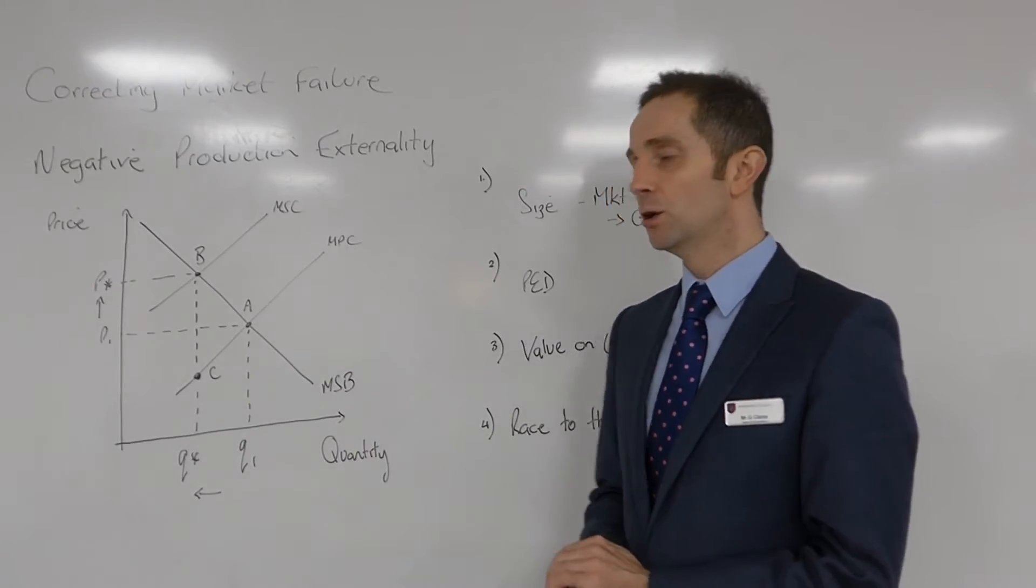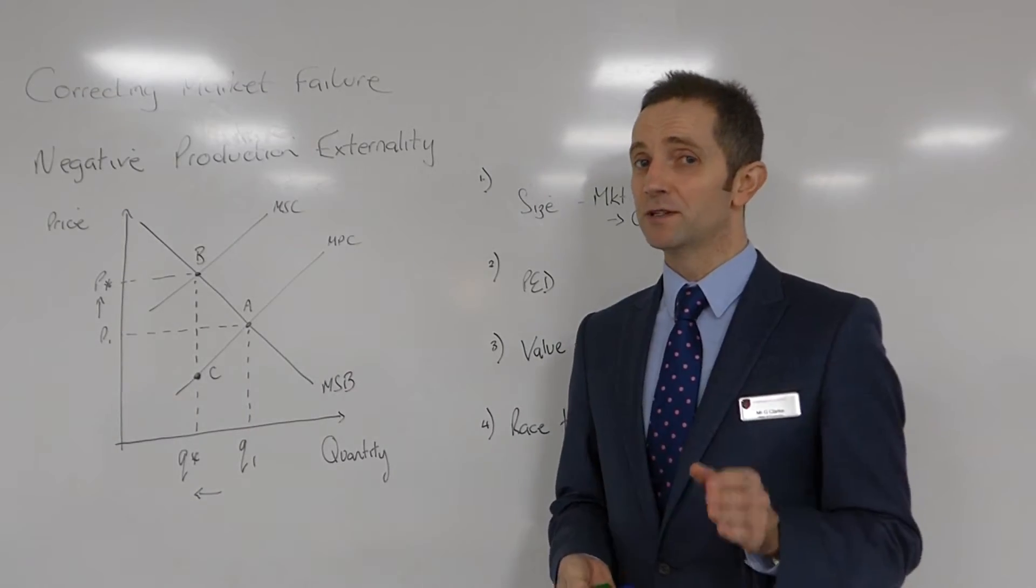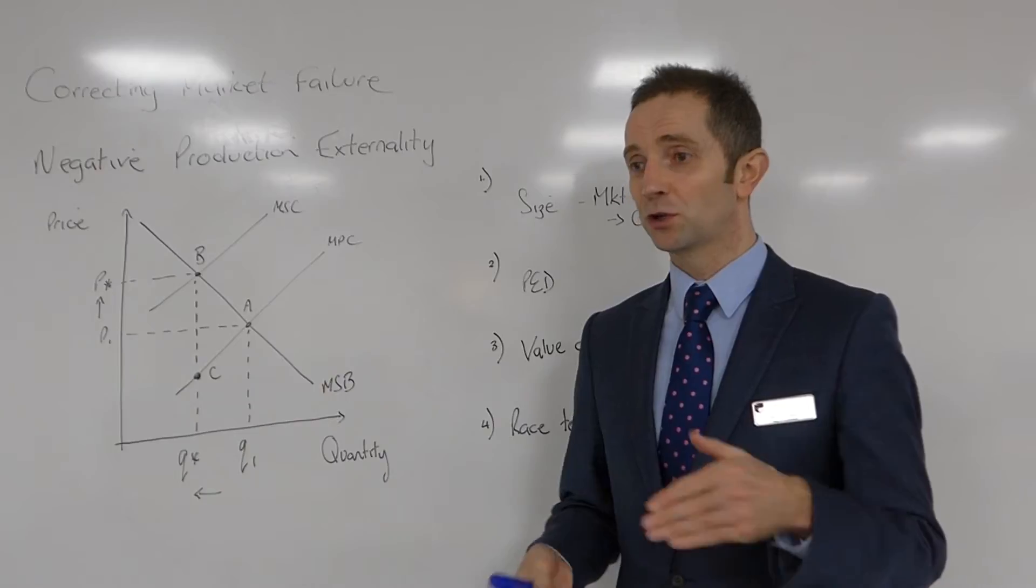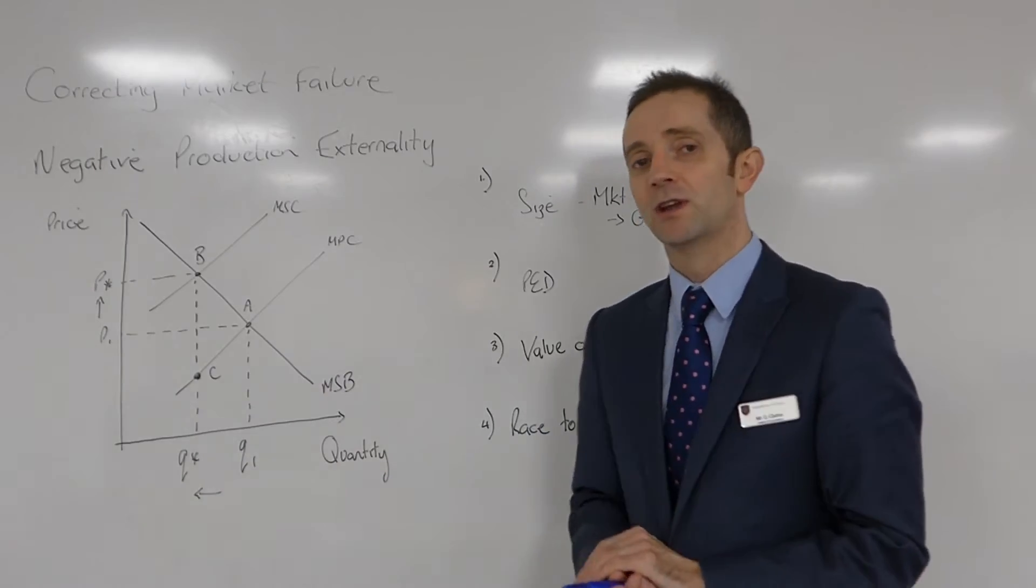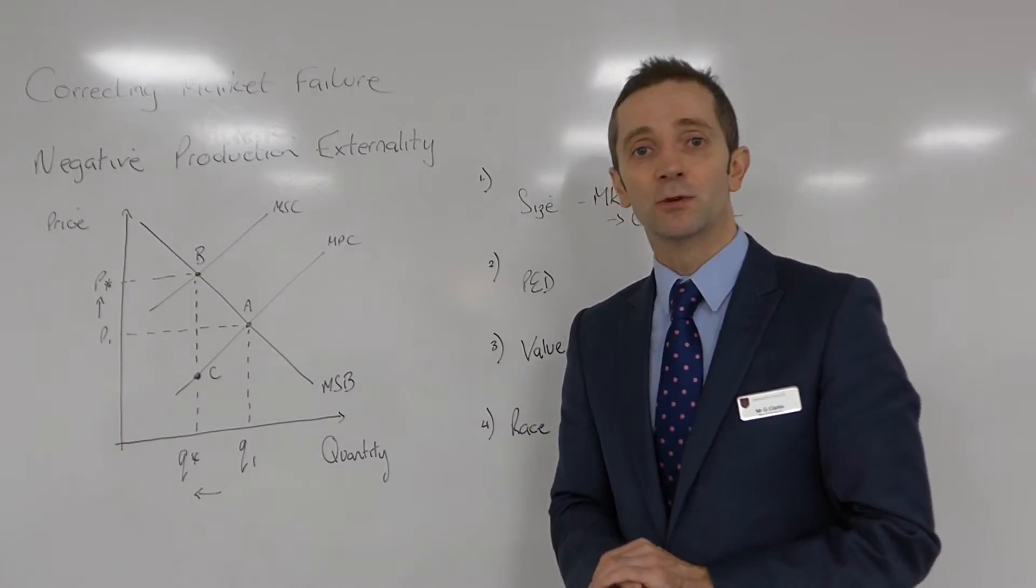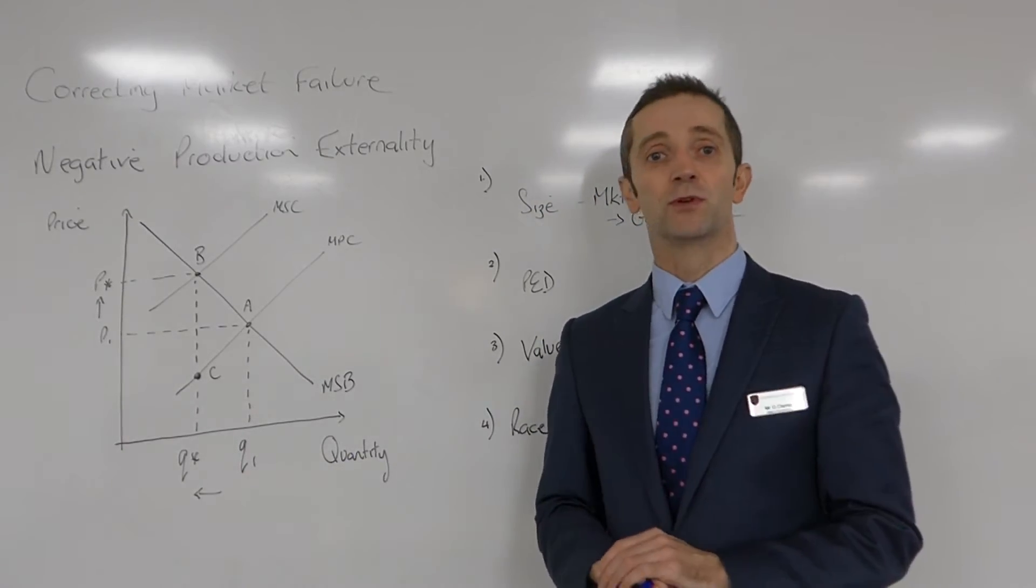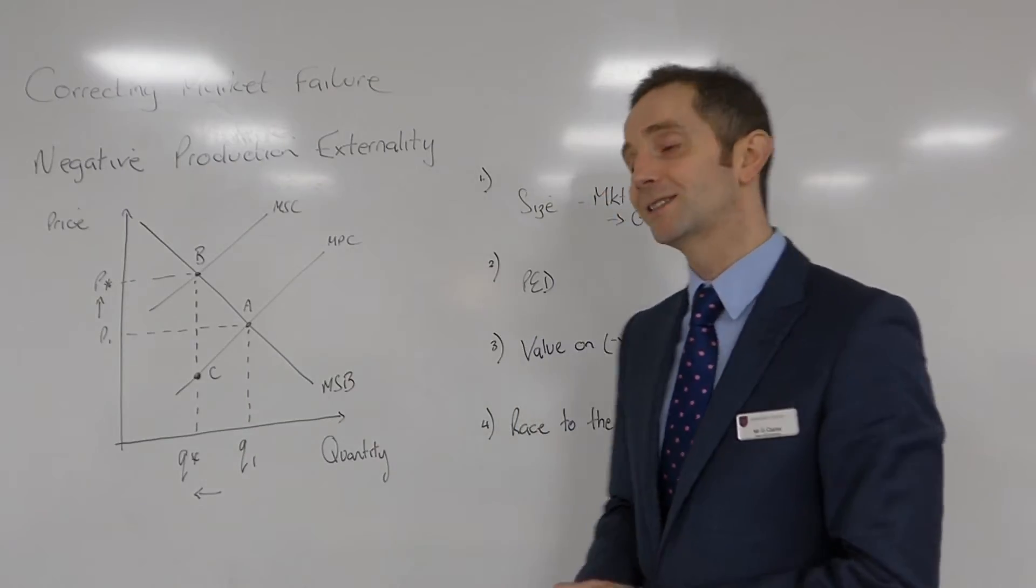Now what did J.M.K. mean by that? He meant that if the government didn't intervene to correct the market failures, then that particular market failure would not self-correct and would simply persist, contrary to the arguments put forward by so-called classical economists.